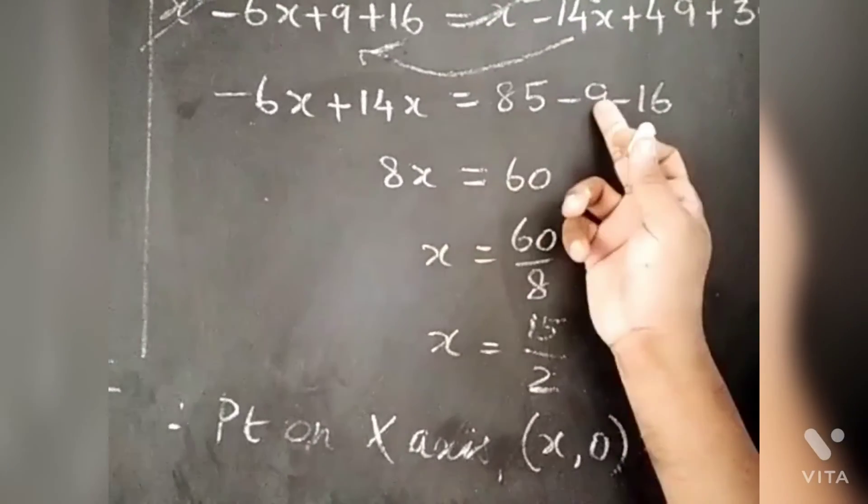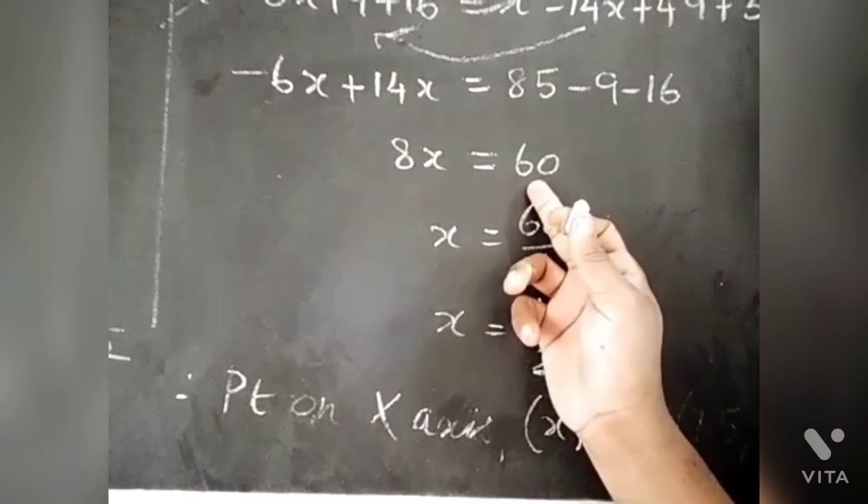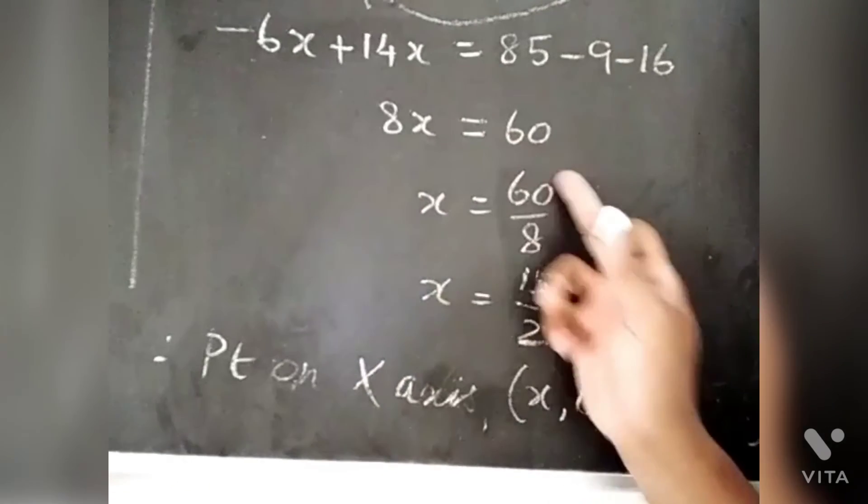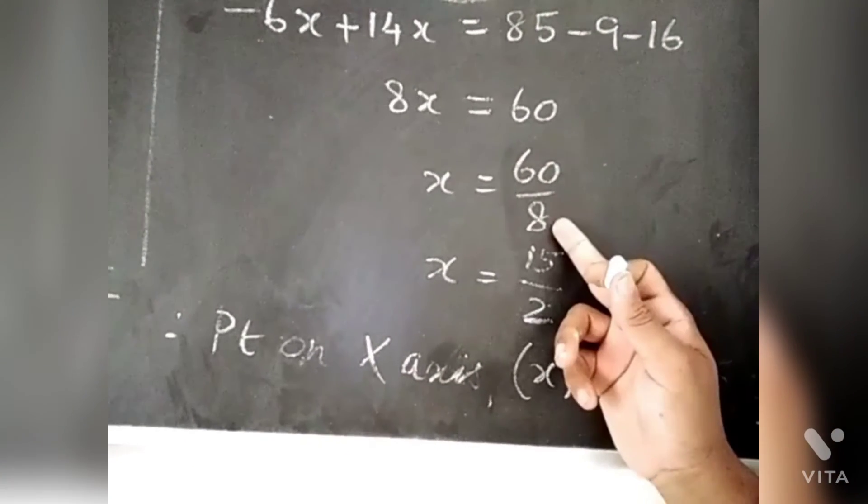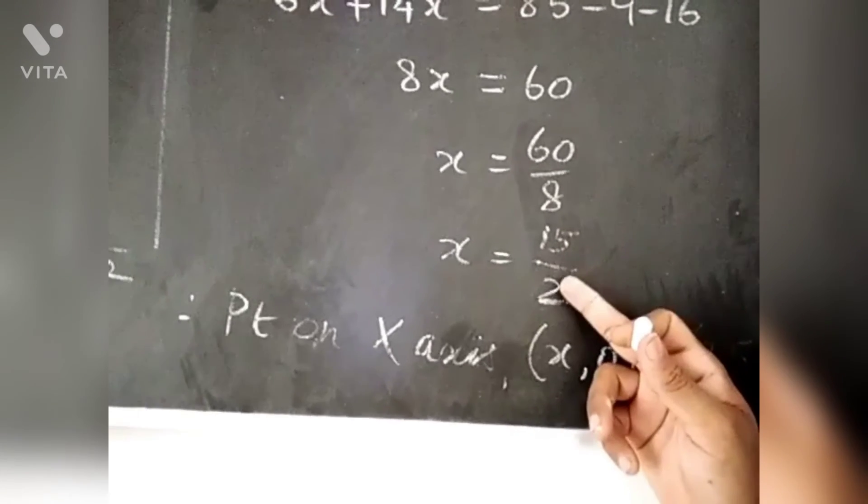85 minus 25 is 60. For multiplication, -6x. 60 by 8, using 4 table cancel. 15 fours are 60, 2 fours are 8.